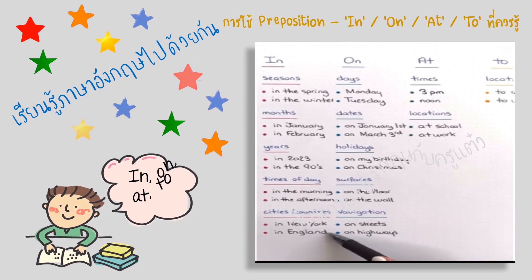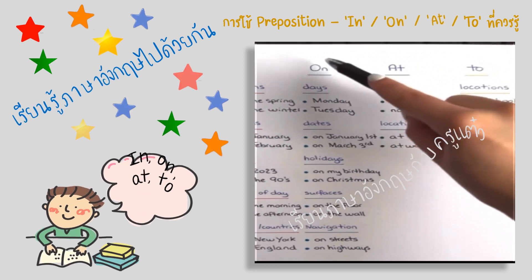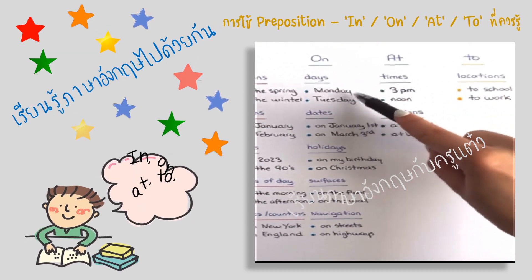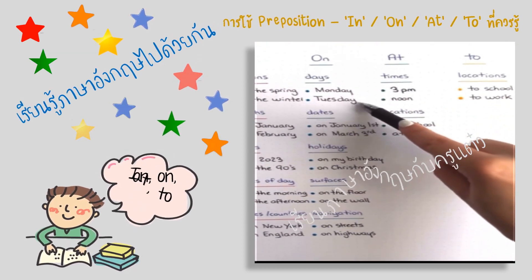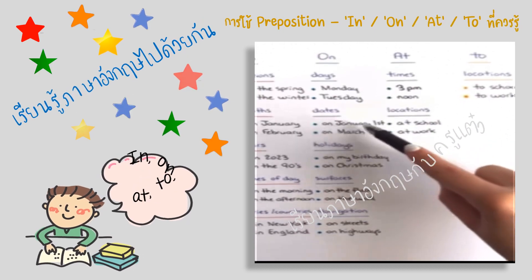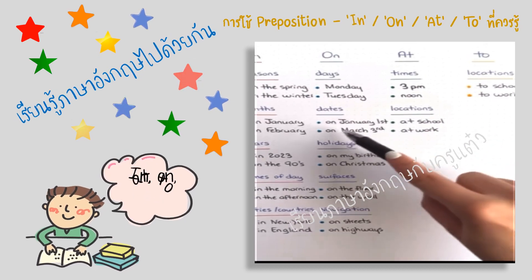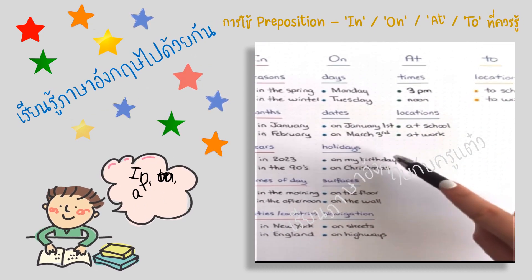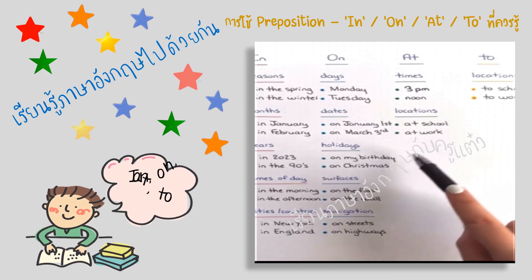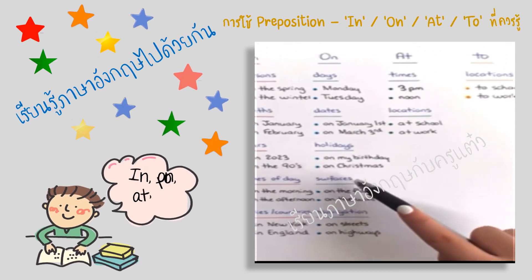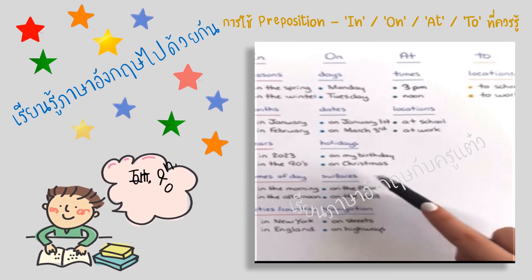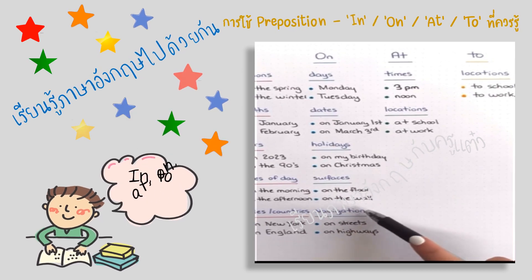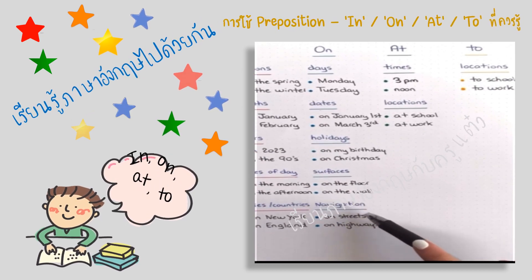The preposition 'on' is used with days — on Monday, on Tuesday; with dates — on January 1st, on March 3rd; with holidays — on my birthday, on Christmas; with surfaces — on the floor, on the wall; and navigation — on streets, on highways.